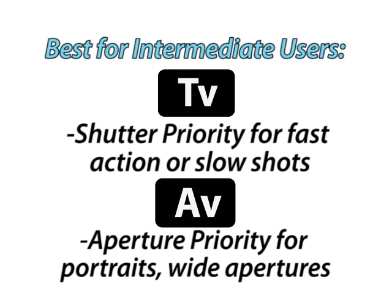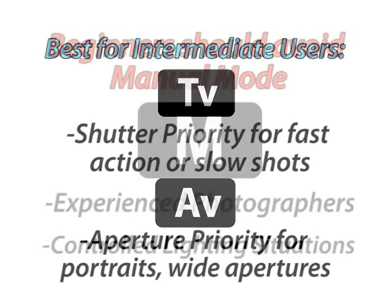Next, try out the shutter speed priority and the aperture priority modes. Practice using the shutter priority mode to stop action or to get long exposures. Practice using the aperture priority mode to get wide apertures and blur out your backgrounds when shooting portraits. Usually on wedding shoots, I shoot almost exclusively on aperture priority mode.